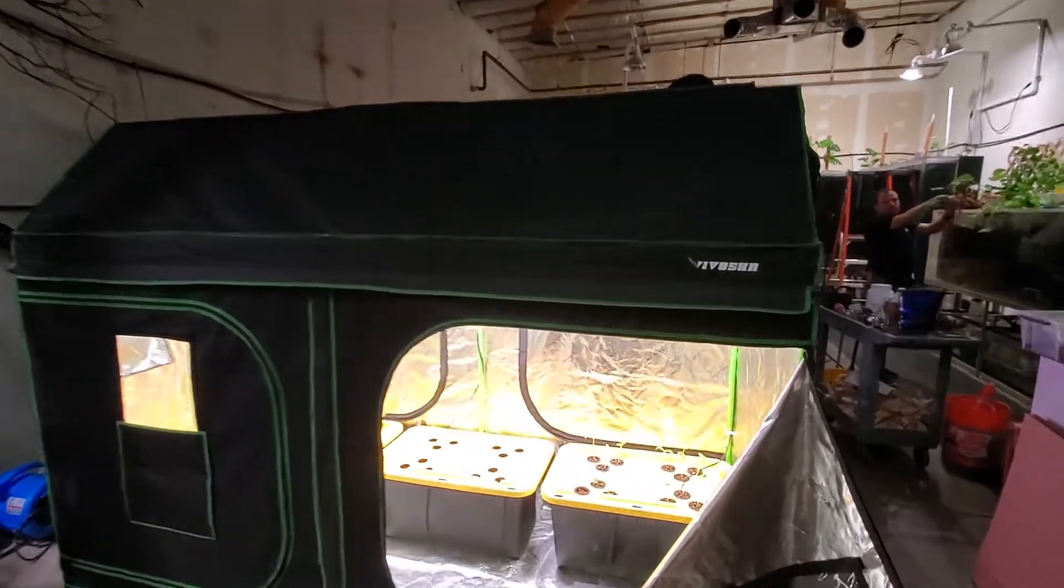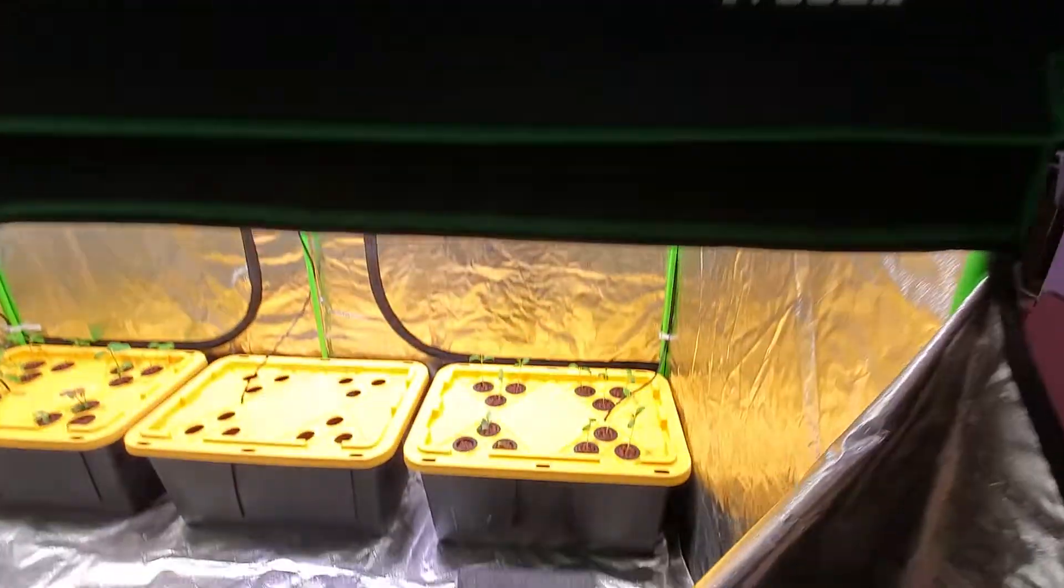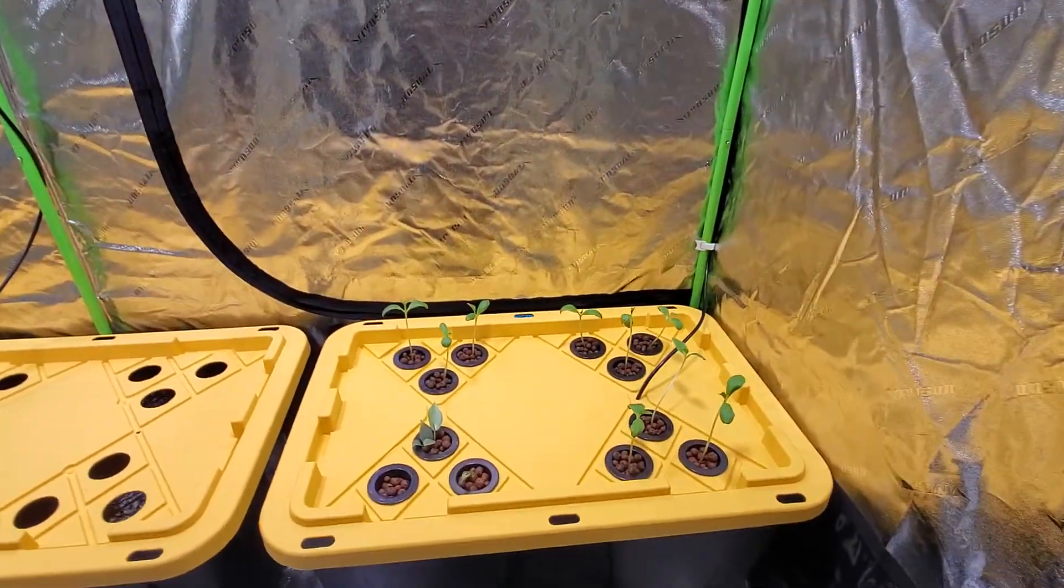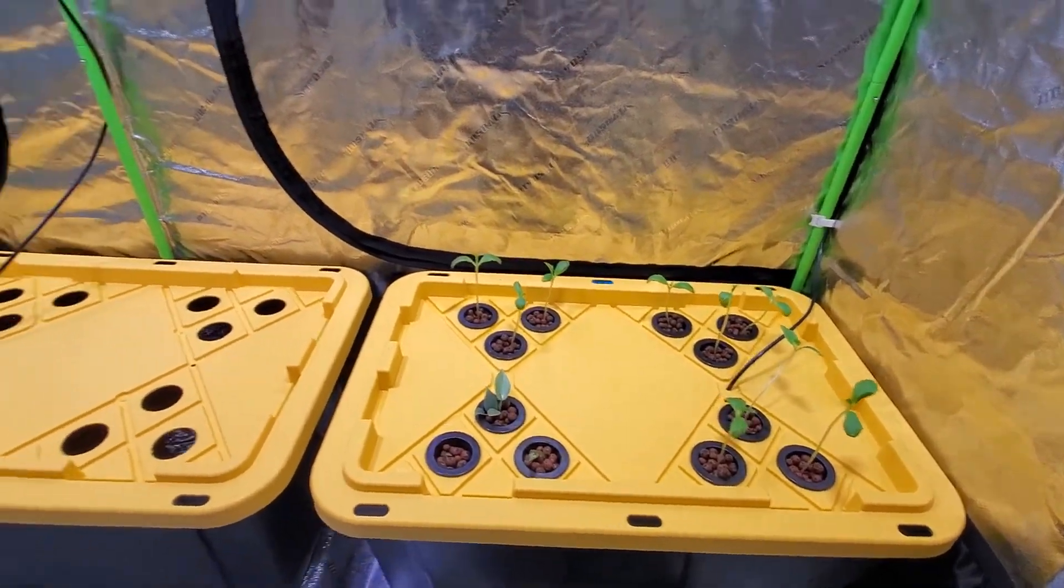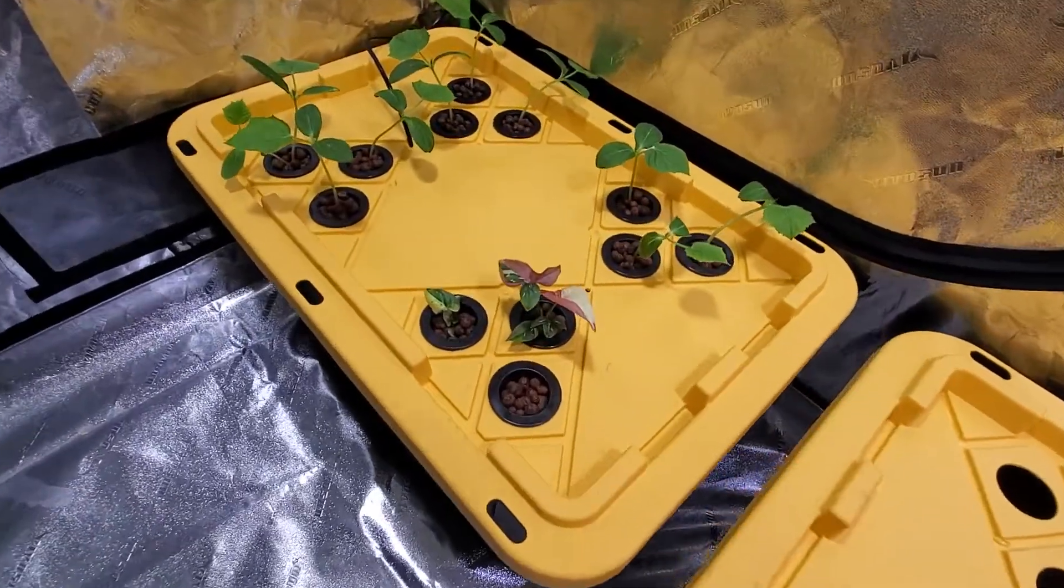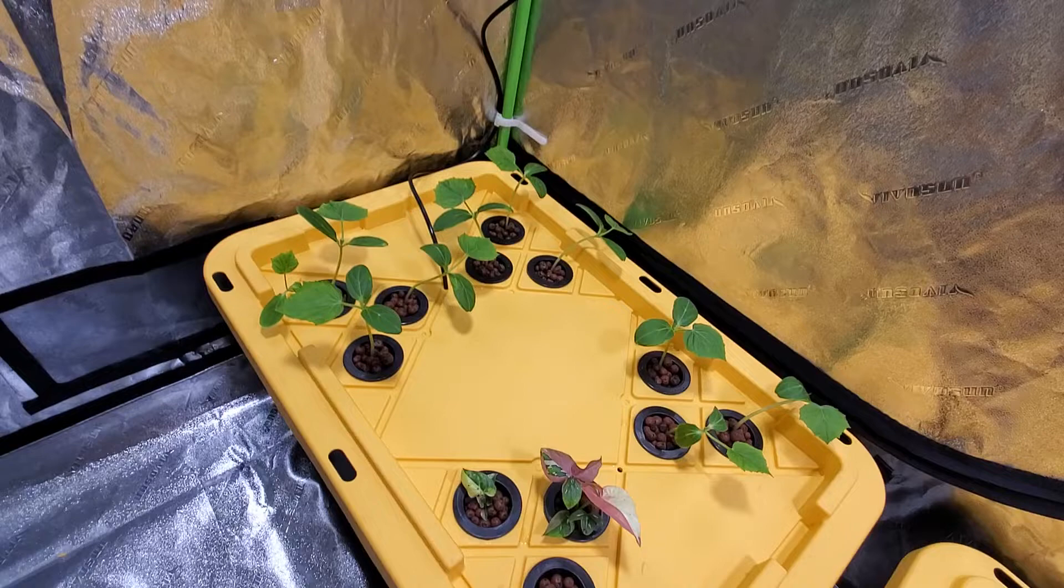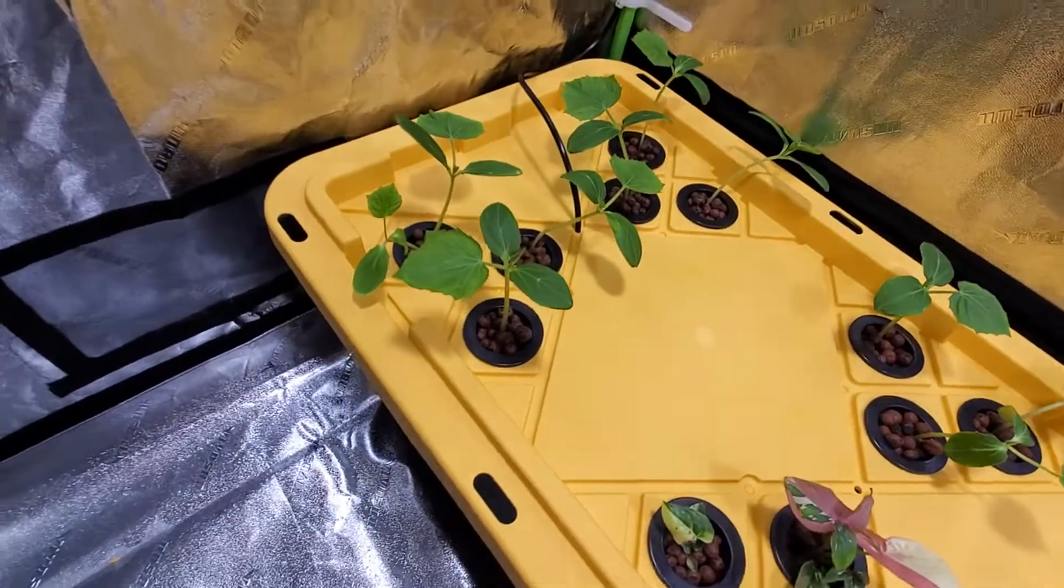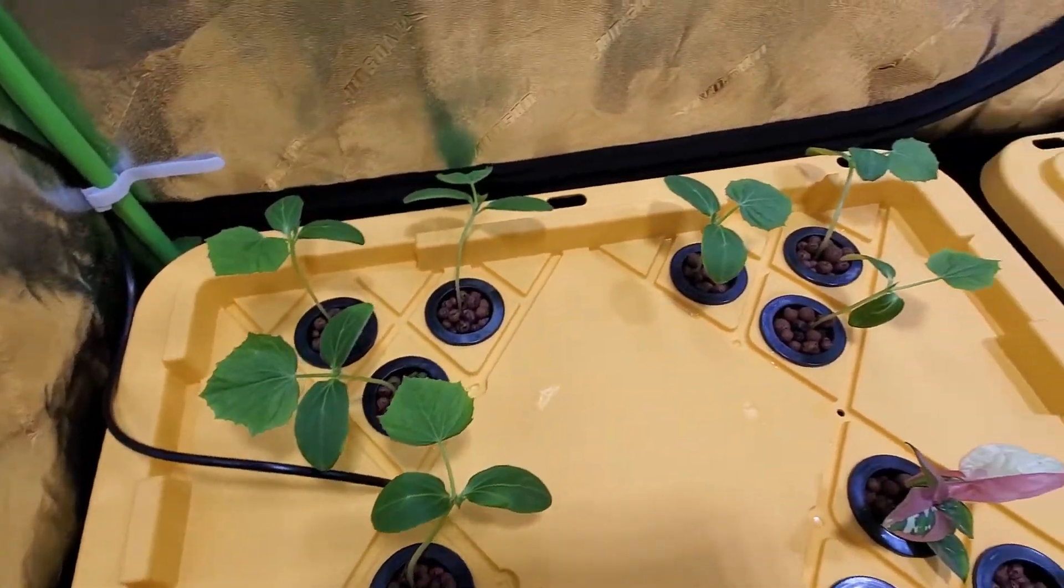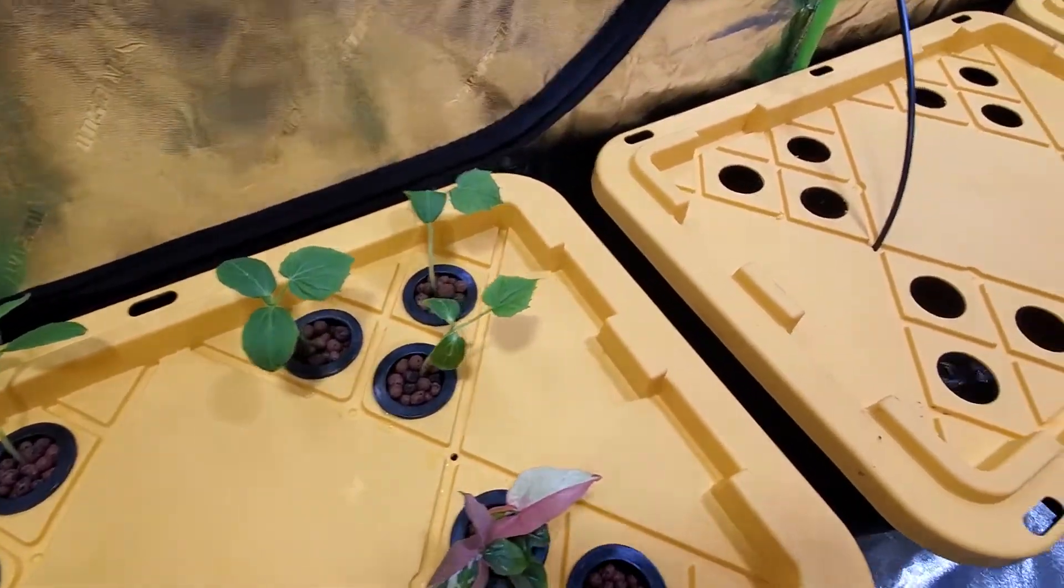This video is on the Vivosun 4x8 grow tent. We are growing cucumbers—some Chinese cucumbers and some American cucumbers. We have a couple plants growing with them to fill the space. We sprouted them and now we are going to be growing them out in this grow tent.